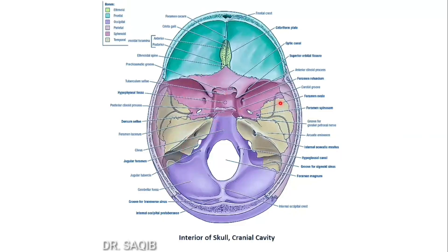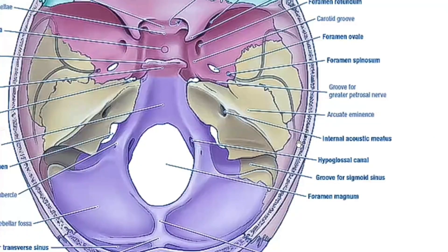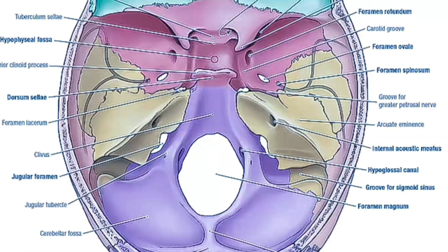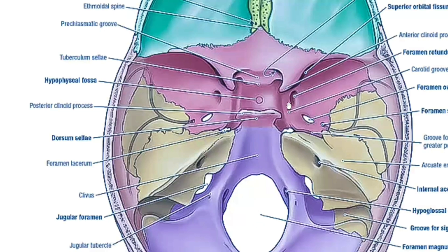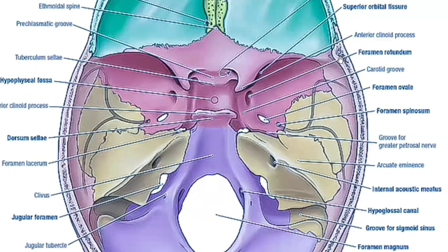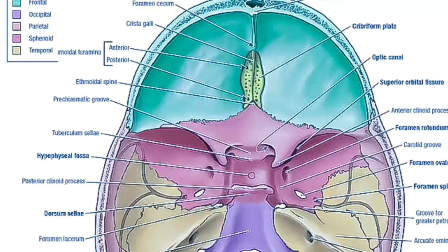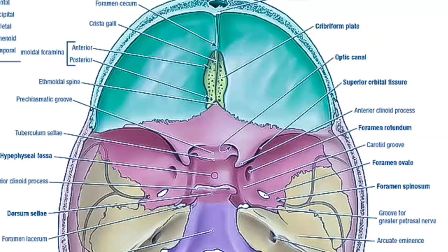The middle cranial fossa has most of the foramina present in the sphenoid bone. The mnemonic is: foramen rotundum, ovale, and spinosum. You can see foramen rotundum, foramen ovale, and foramen spinosum here. Also visible are the superior orbital fissure and the optic canal.